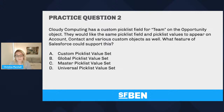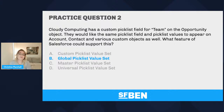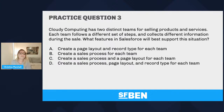Question two: Cloudy Computing wants the same picklist field and values to appear on account, contact, and various custom objects. The options are: custom picklist value set, a global picklist value set, a master picklist value set, or a universal picklist value set. This is a great example of made-up features using familiar-sounding words. Words like 'universal' and 'master' sound accurate but have nothing to do with what's being asked. The correct answer is a global picklist value set.